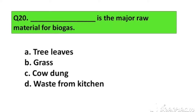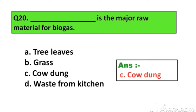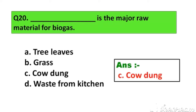Question number 20. What is the major raw material for biogas? Option A. Tree leaves, B. Grass, C. Cow dung, D. Waste from kitchen. The right answer is Option C. Cow dung.